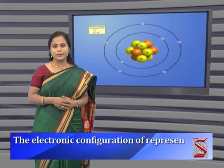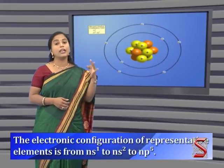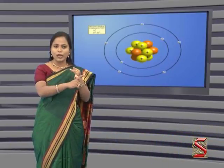Representative elements are those having an incomplete outermost shell. The electronic configuration of representative elements ranges from ns¹ to ns²np⁵. Representative elements can be further divided into s block elements, p block elements, d block elements, and f block elements.